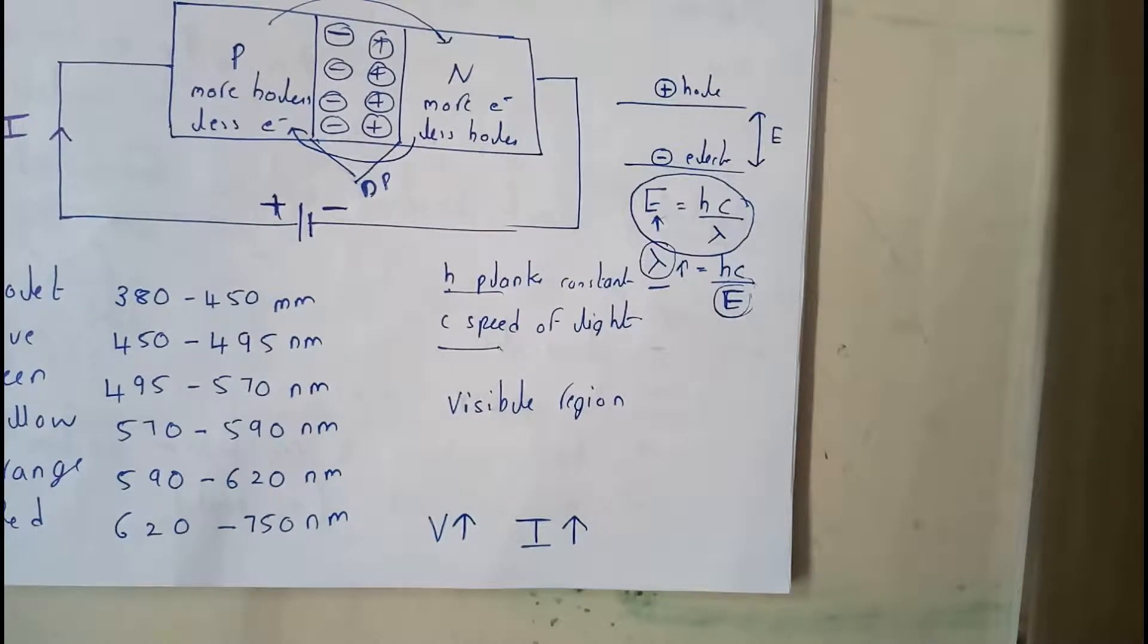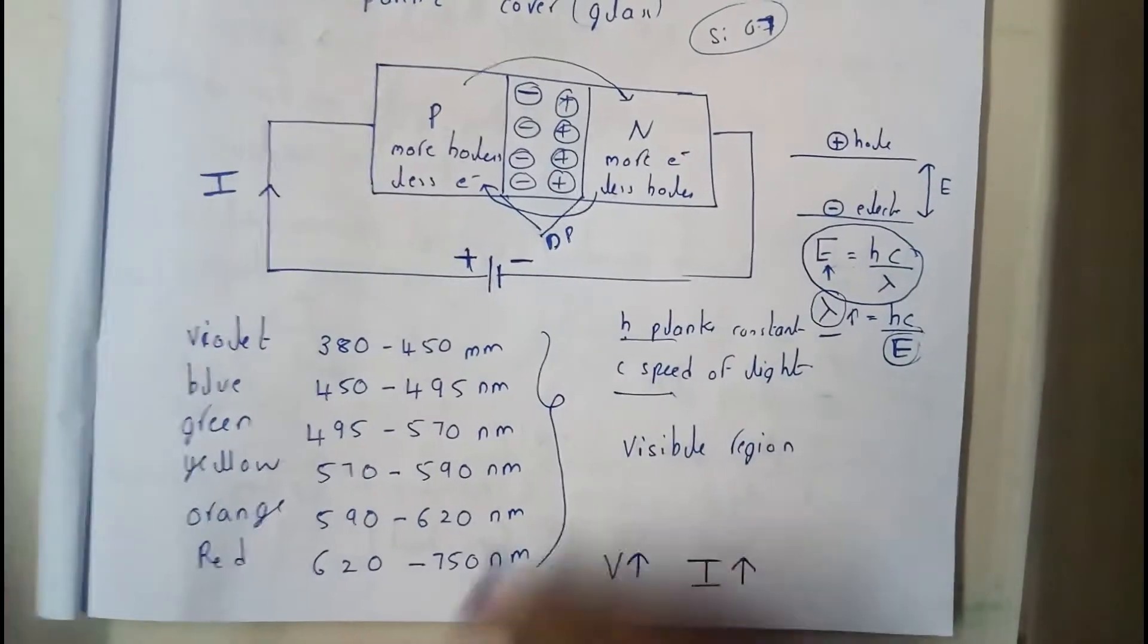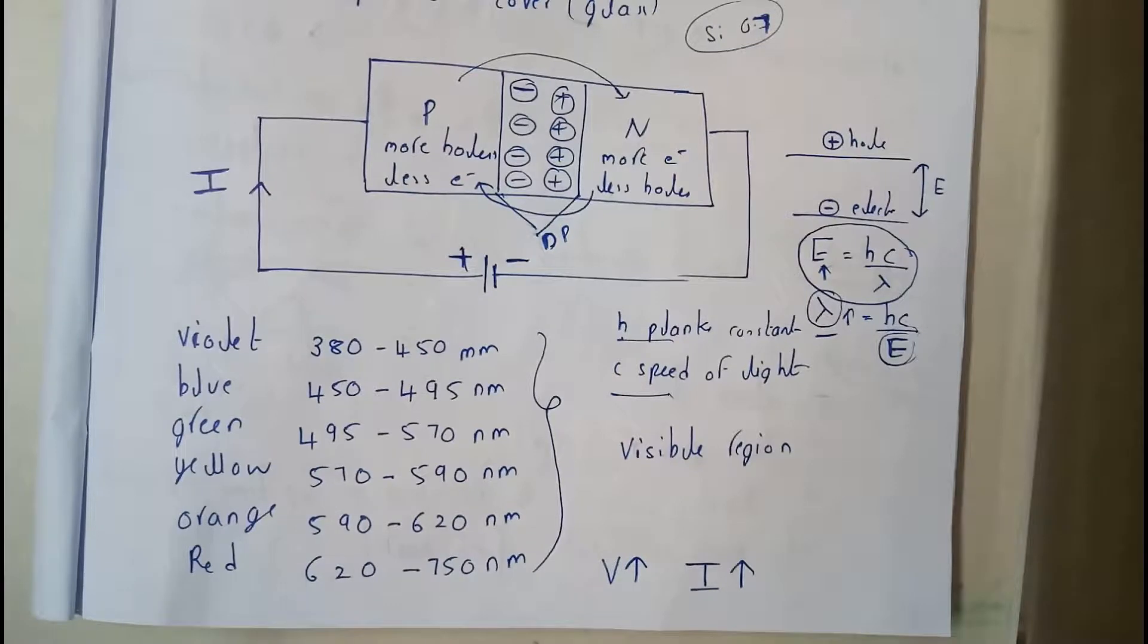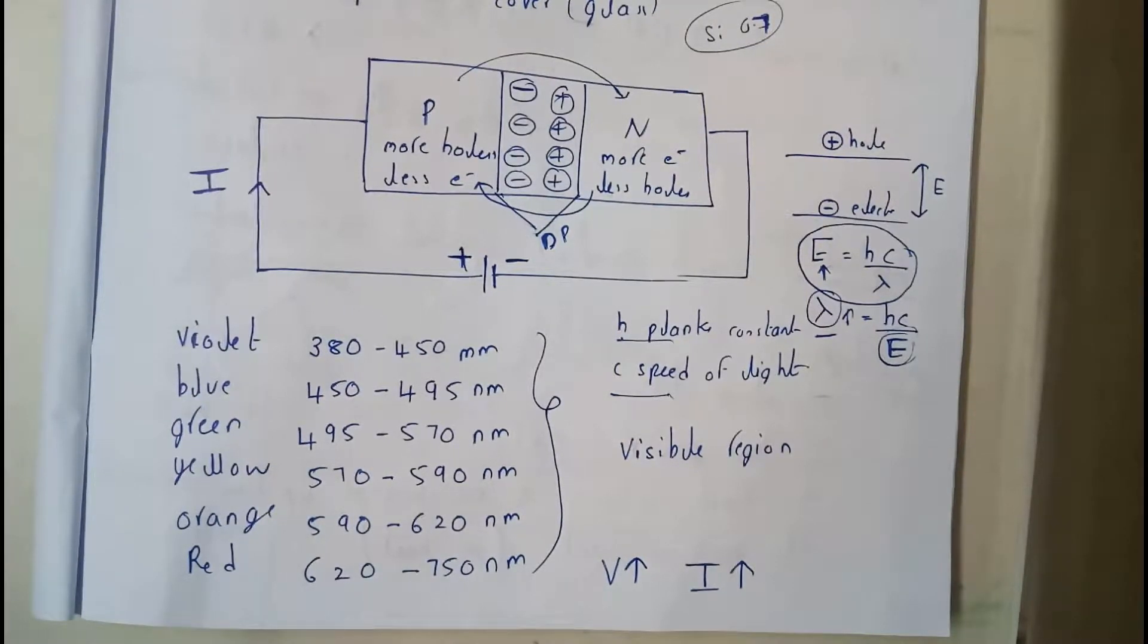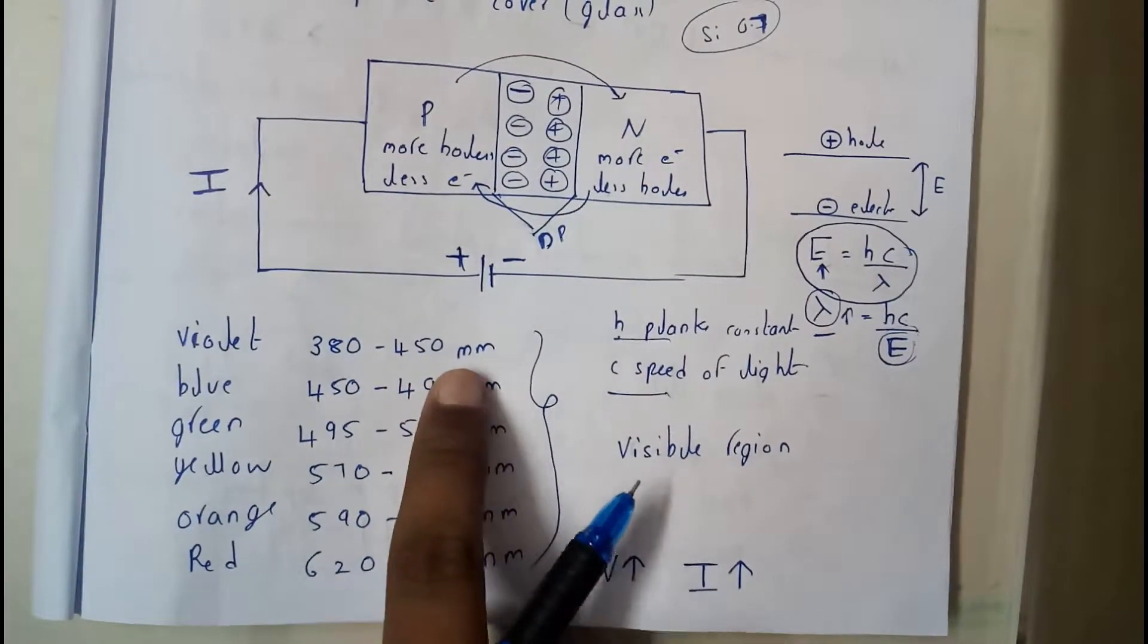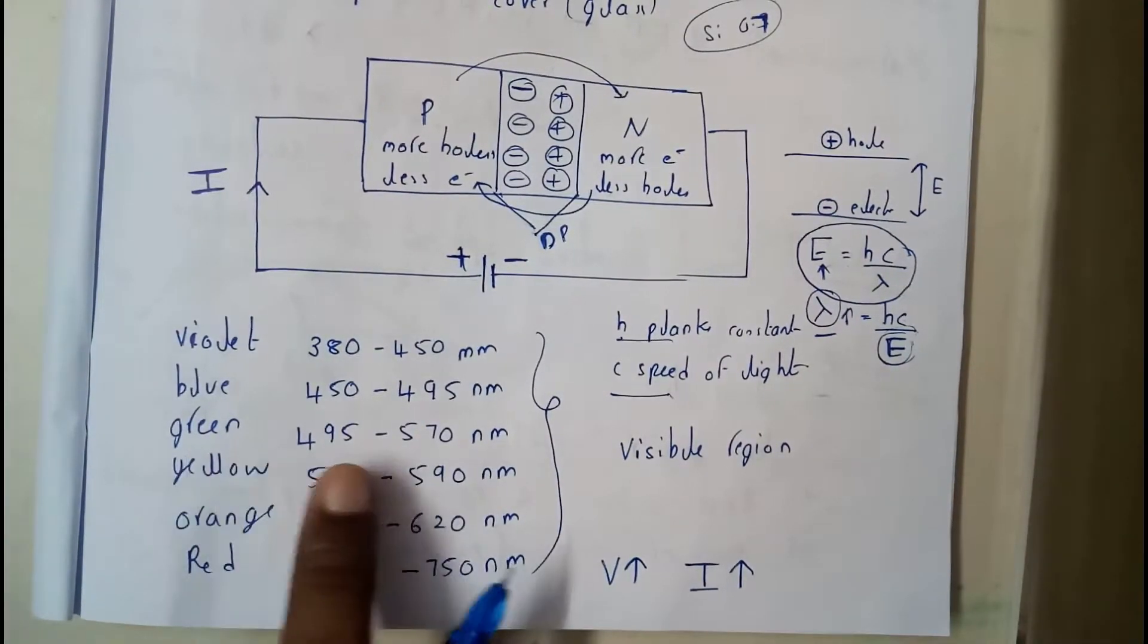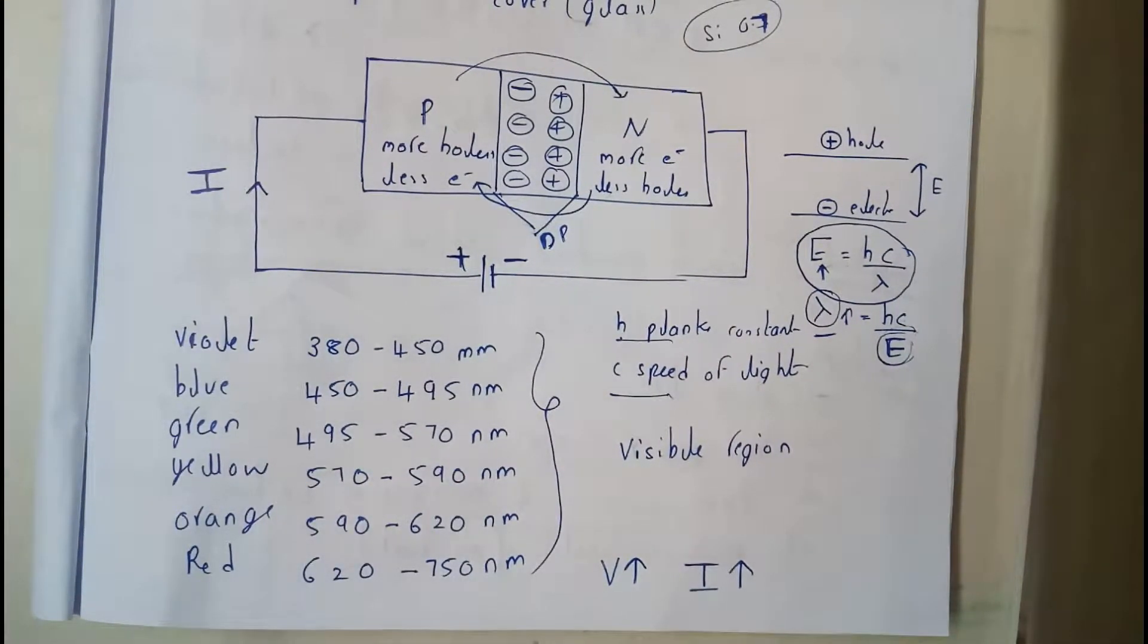By varying the E values, you are going to get these many different colors - violet, that's just the range of the visible region. Violet is from 380 to 450, blue 450 to 495, green 495 to 570, yellow 570 to 590, orange 590 to 620, red 620 to 750 - like that it moves on.